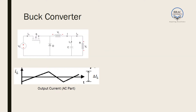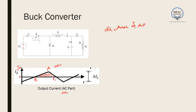Now let us look at the buck converter. In the case of the buck converter, I_L equals I_output. The AC part of the output current has a triangular shape around zero. To measure the total charge dQ, we calculate the area of triangle ABC.